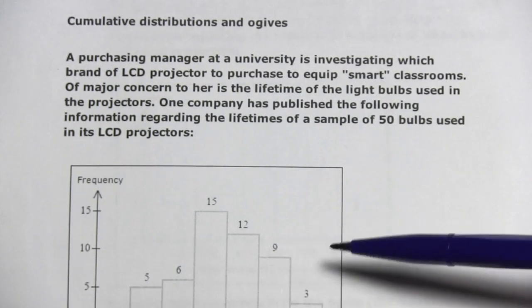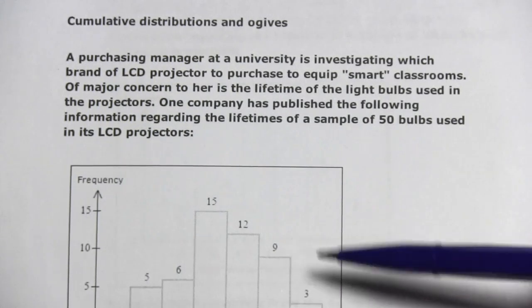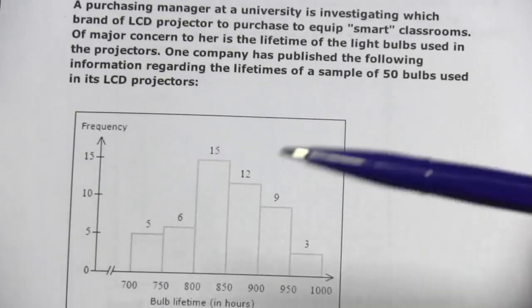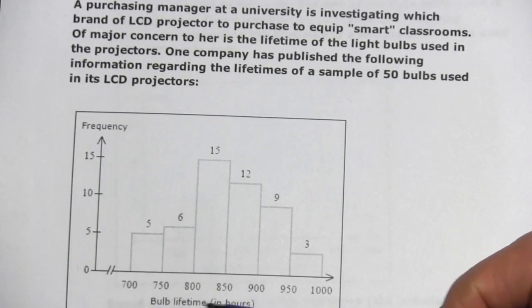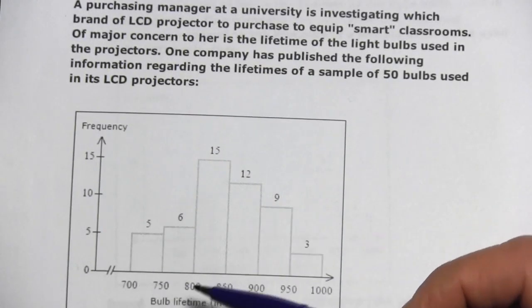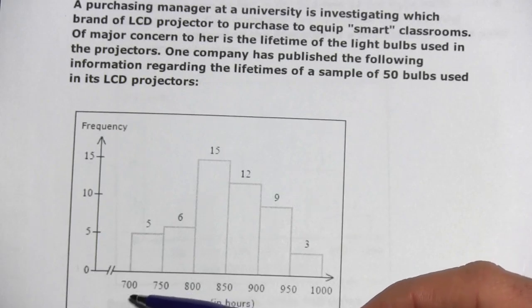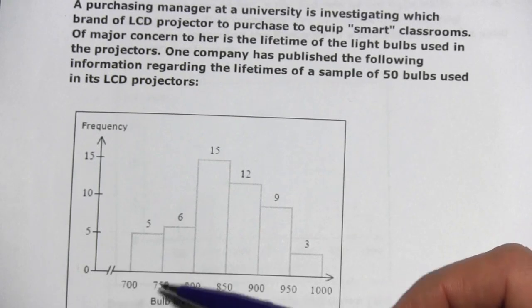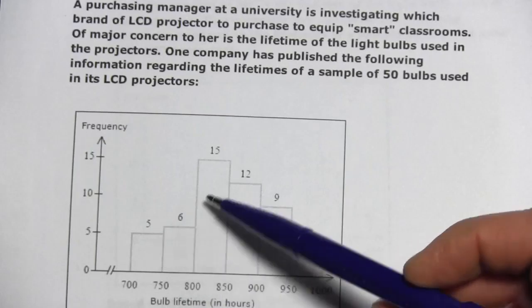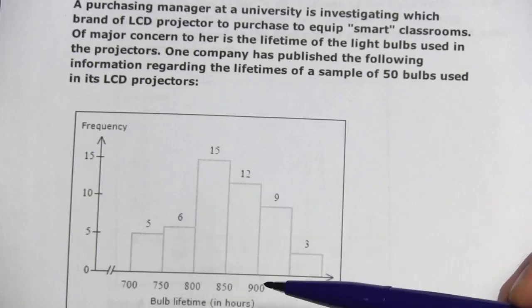What these problems start with is typically a histogram that shows the frequency of something. In this case, you have a bunch of light bulb lifetime hours. The light bulbs that burnt out somewhere between 700 and 750 hours, there were five of them. These bars here in the histogram are showing the frequency.